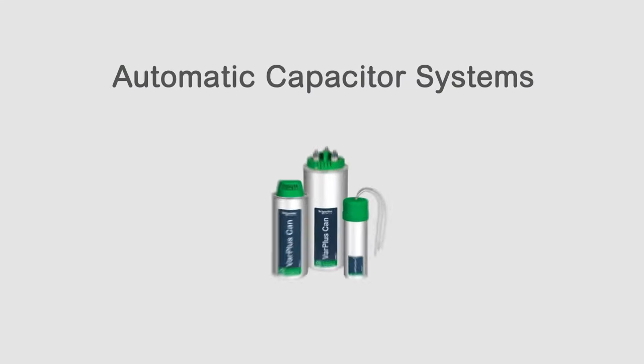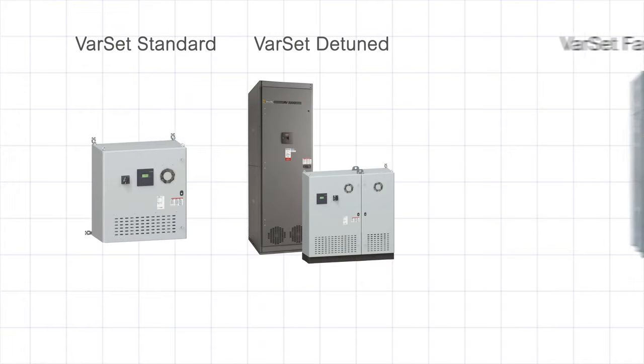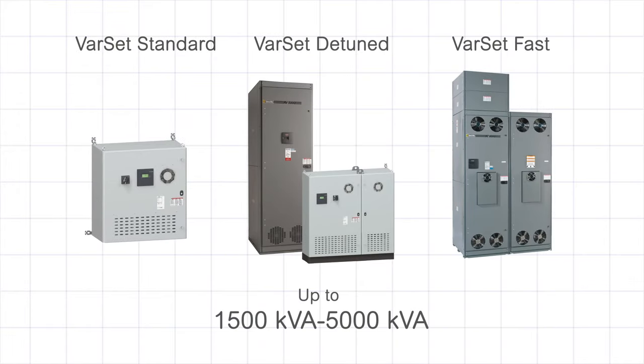The most cost effective way to correct power factor is to use automatic capacitor systems. They're typically installed at the main distribution board or at the MCC's. The Varset system is suited for small and medium-sized networks up to 1,500 kVA and in large installations up to 5,000 kVA.